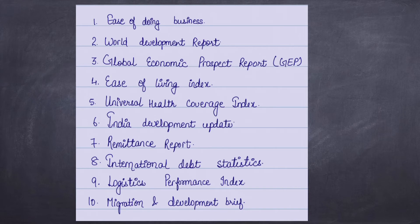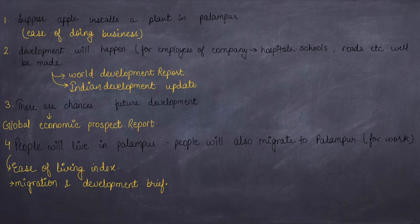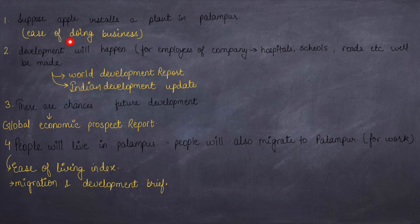Let's try to remember this through a story. Imagine Apple is installing its plant in a city called Palampur. Apple was able to install its plant there because doing business in Palampur is easy. Therefore, the first report the World Bank publishes is the Ease of Doing Business report.